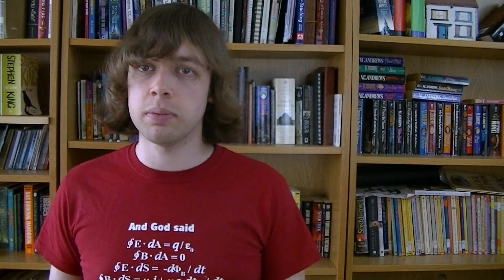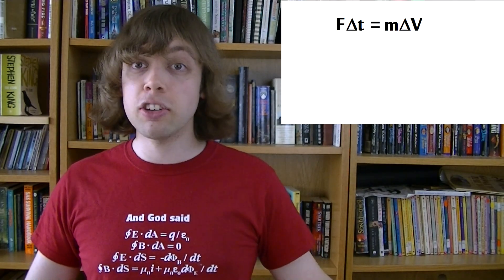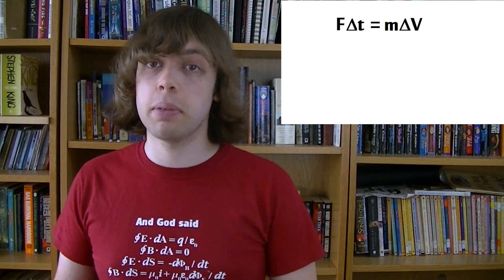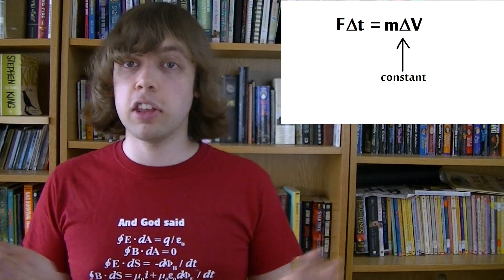If we go back to the impulse momentum theorem, we see that f multiplied by t, that's the impulse, is equal to the change in momentum. By the end of a car crash, when all is said and done, the cars are pretty much going to be stopped. The change in momentum during a collision is going to be really determined by how fast the cars were going before the collision. If you're going at 50 miles an hour before the collision, and after the collision you're stopped, then your change in momentum is going to be your mass multiplied by that 50 miles an hour, and there's nothing you can do to change that.